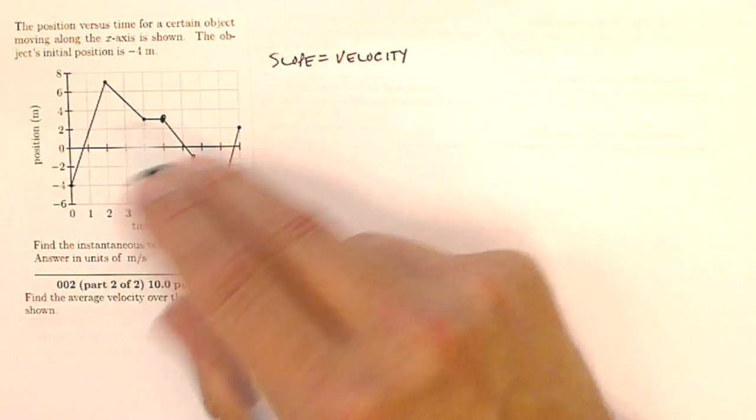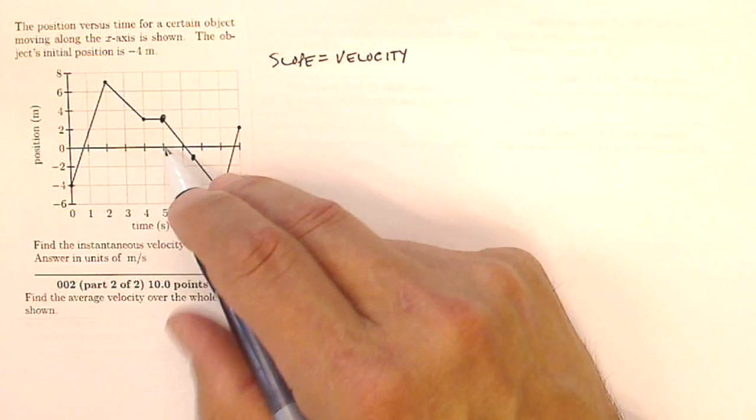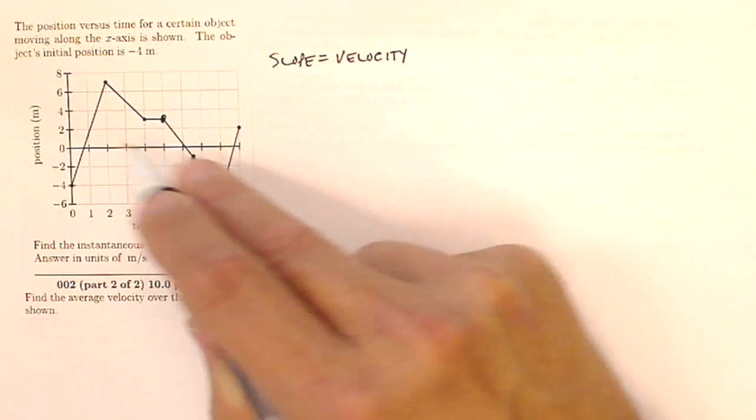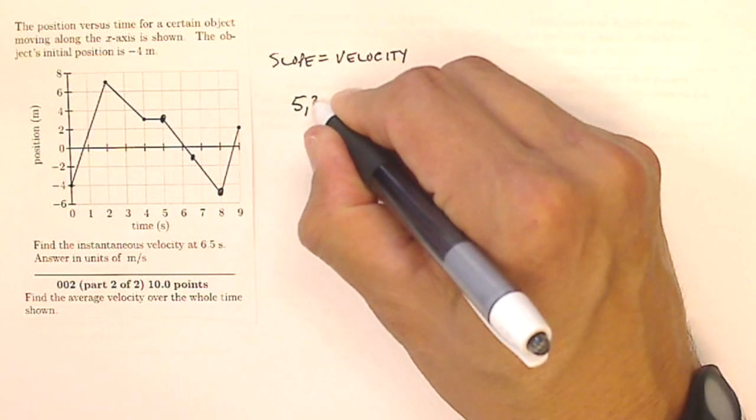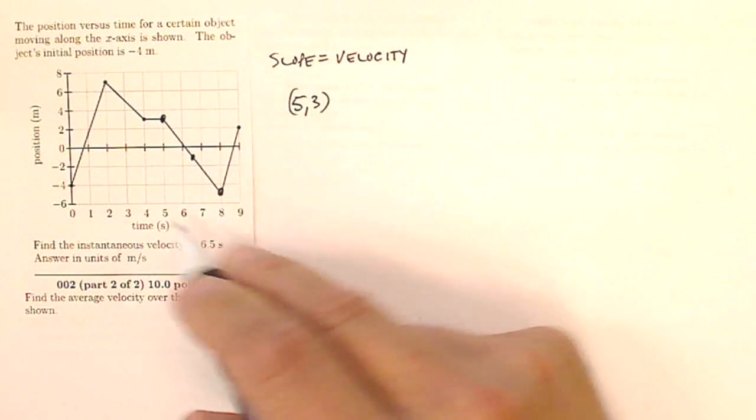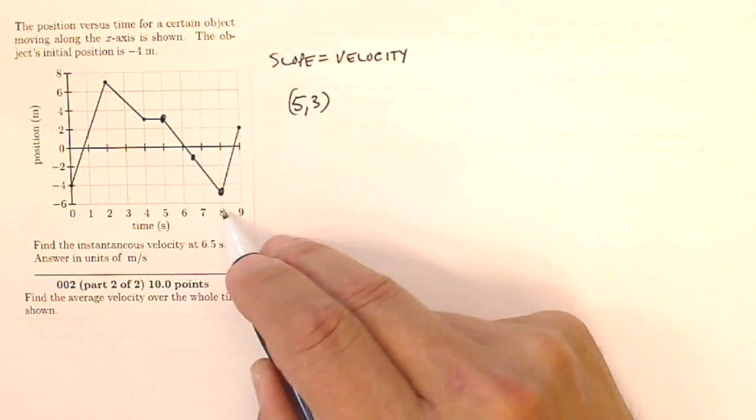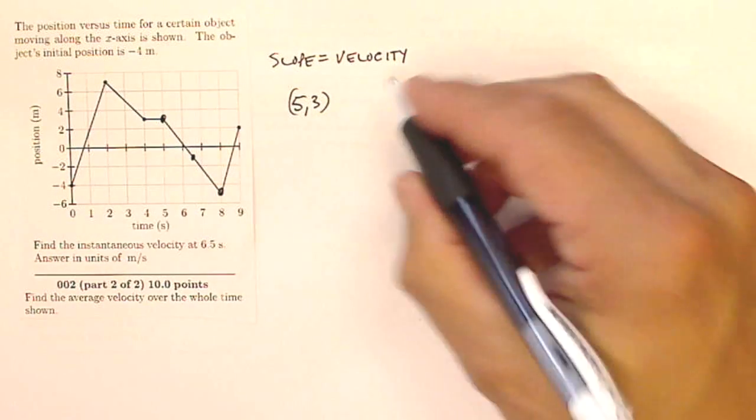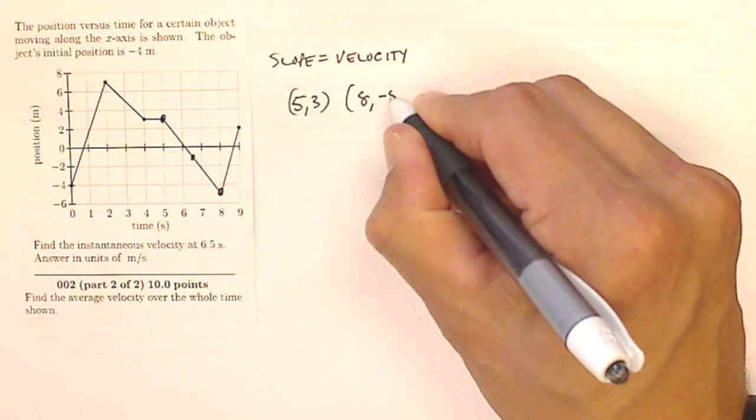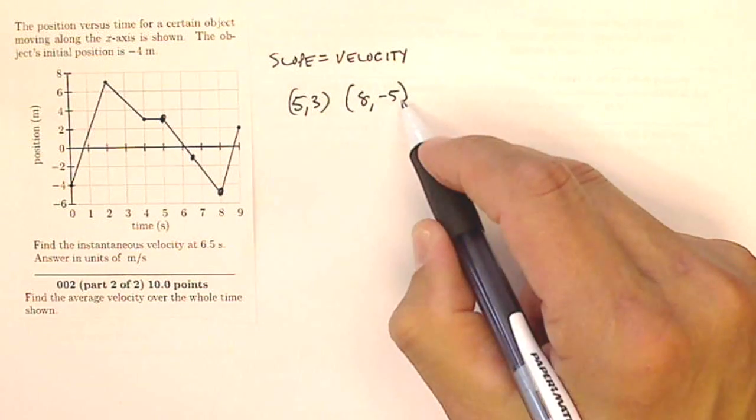Well, I start at a position of five seconds and three meters. So I'm going to start at point five comma three (x,y), and I'm going to move on to point eight and this is negative five. So my other one is eight comma negative five. So this is my x,y, x,y.